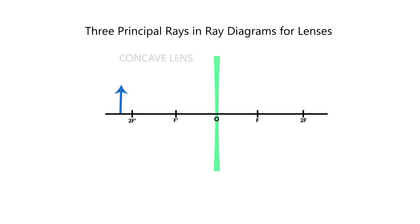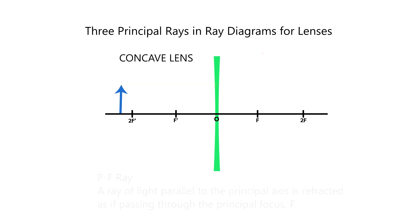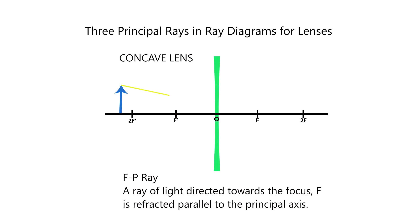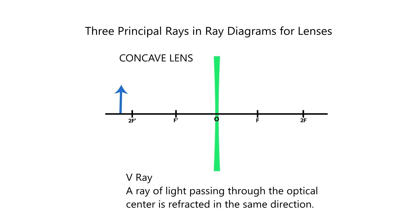For concave lens: PF ray — a ray of light parallel to the principal axis is refracted as if passing through the principal focus. FP ray — a ray of light directed towards the focus is refracted parallel to the principal axis. V ray — a ray of light passing through the optical center is refracted in the same direction.